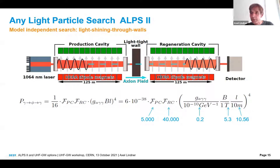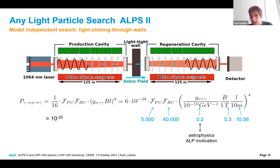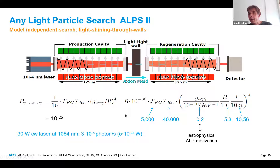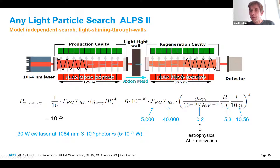With the magnet string at 5.3 tesla and 106 meters, and optical resonators with power buildup of about 40,000 behind the wall and 5,000 in front, the conversion probability is of order 10^-25 — boosting the bare 10^-33 by the resonators. With a 30-watt CW laser shining into the production cavity, we expect a few photons per day, or order 10^-24 watts to be detected at the exit.